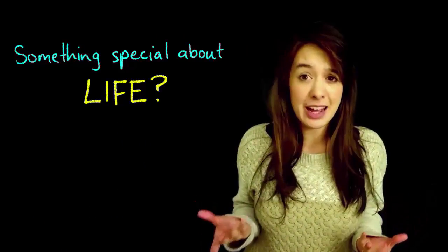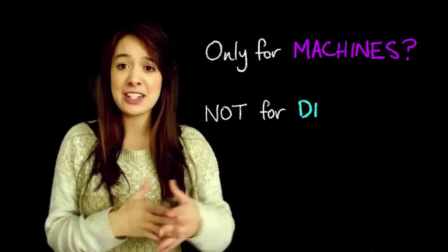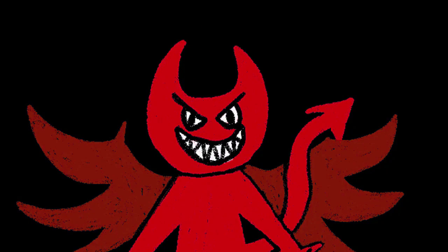So what was it about Maxwell's demon that was able to break this unbreakable law? Is there something special about life? Is this law only for machines and not for tiny omniscient demons? It wasn't until 100 years later when physicist Leo Szilard came along with the answer. The flaw in our system was coming from the most unexpected place: the demon's brain.